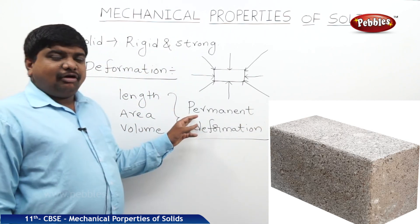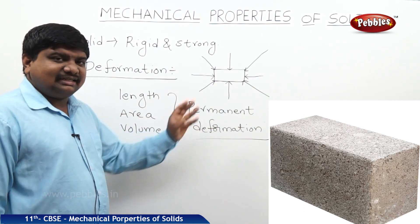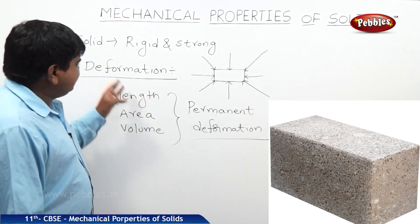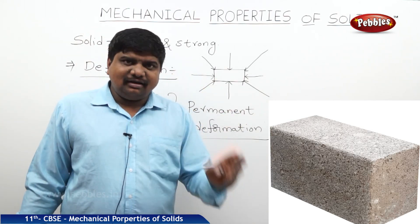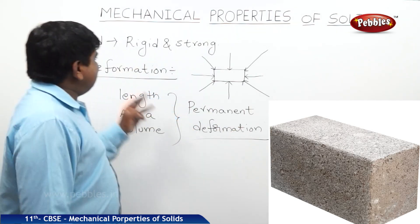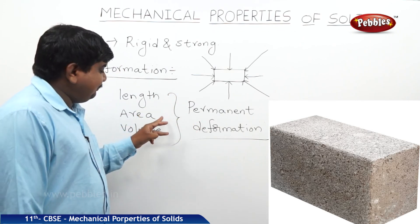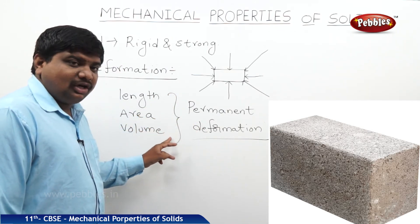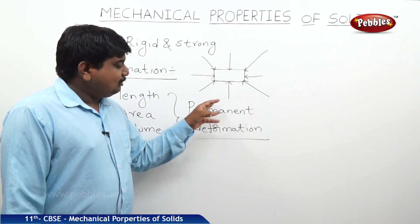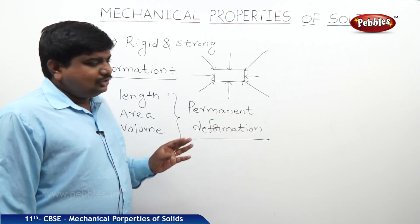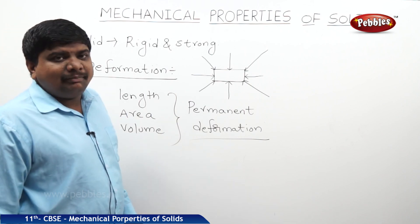In some solids, the deformation is permanent. In some solid materials, the deformation is temporary, meaning it is time-dependent. This is called deformation. If a mechanical force is applied on a rigid or strong solid body, there is a change in length, area, or volume — in a single word, deformation. This deformation may be permanent or temporary, and this is one of the results of applied force on solid materials.